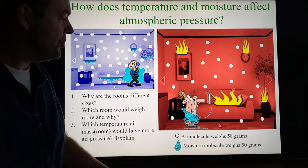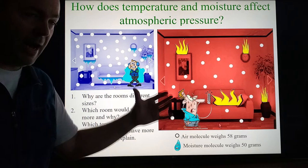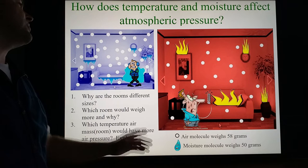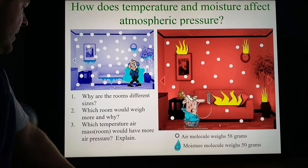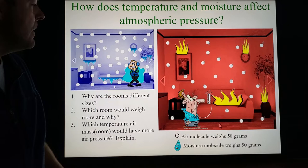Why are the rooms different sizes? Well, of course, that's because of different temperatures. It's trying to relate to that whole expanding when you're hot and contracting when you're cool. Which room would weigh more? Well, the denser one, of course. Denser things, more matter packed into a tighter area, of course they have more mass. And which temperature air would have more air pressure? Well, hopefully you pick the cold room because denser air exerts more force downwards.